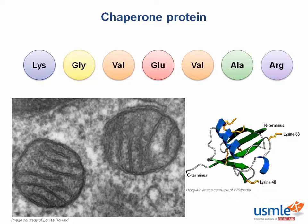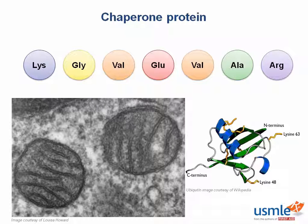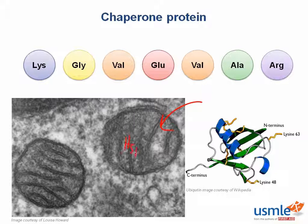The example we give in the book is heat shock protein 60, so named because of its 60 kilodalton size. This protein is used in the structure shown here — do you recognize this? Right, that's a mitochondria. Remember, most proteins in the mitochondria are made outside of the mitochondria and have to be imported into it. And once they get there, heat shock protein 60 helps them fold into the right shape.